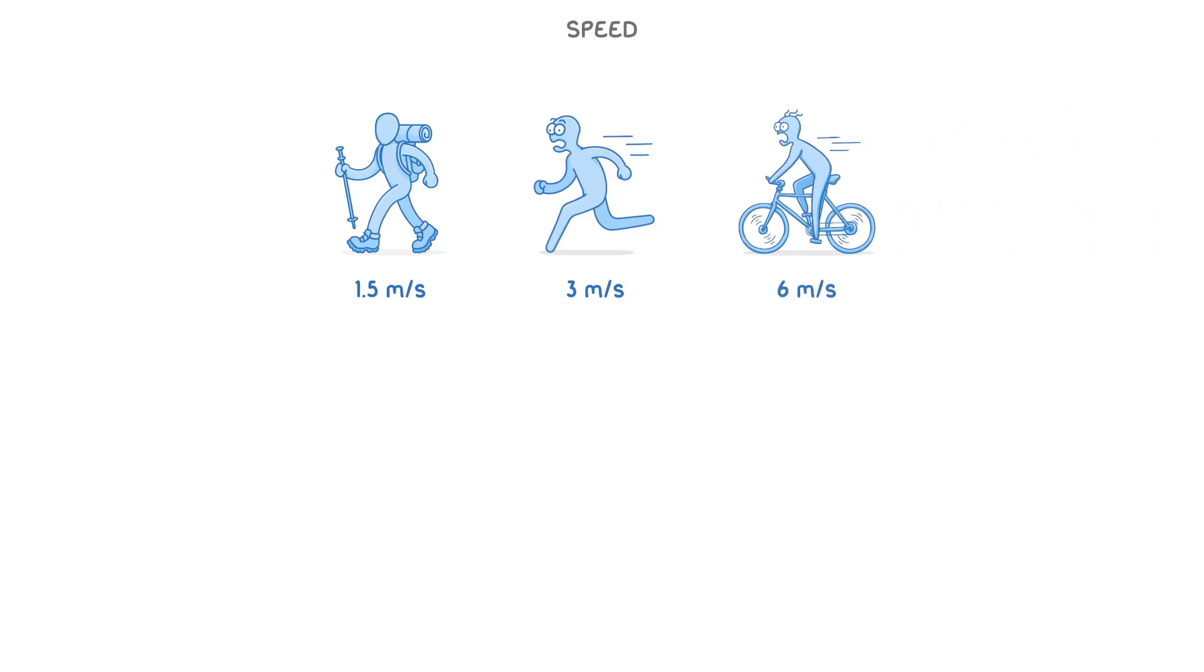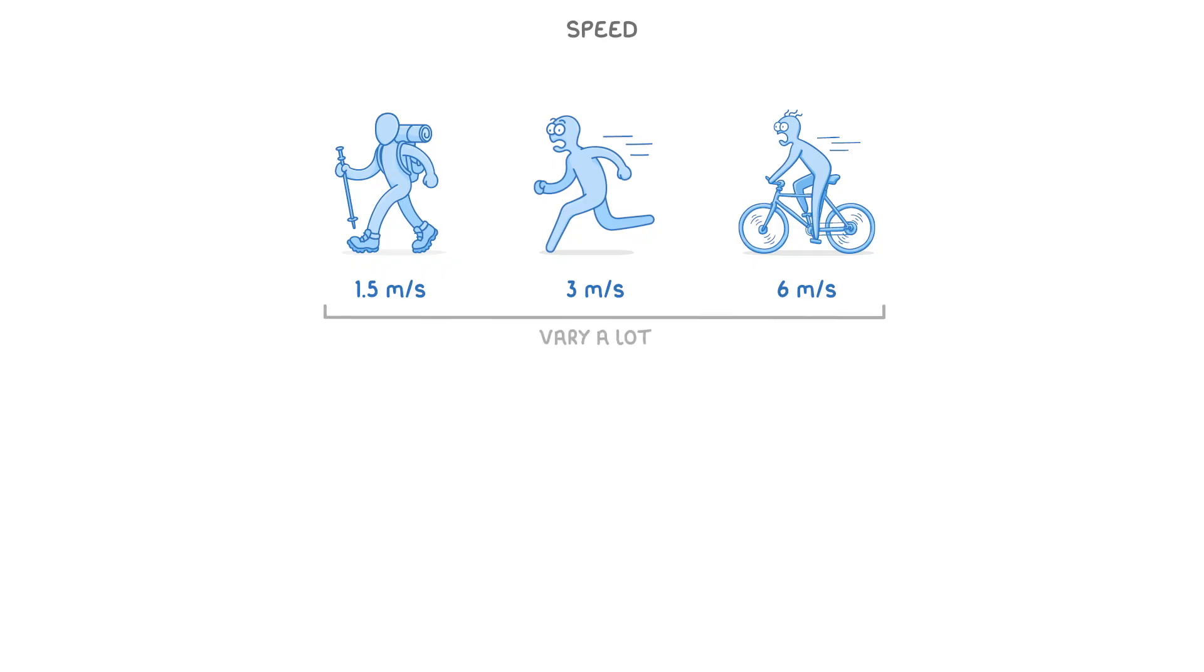To give you an idea of real life speeds in metres per second, people walk at about 1.5 metres per second, run at around 3 metres per second, and cycle at about 6 metres per second. All of these numbers do of course vary a lot though, depending on the age and health of the individual, and how much effort they're putting in at the time.